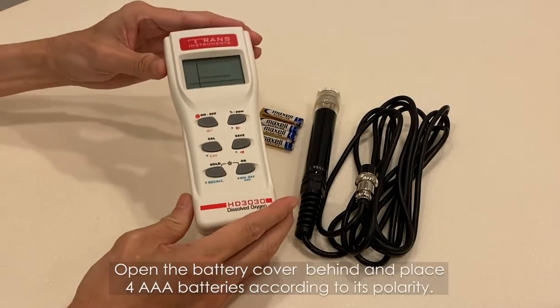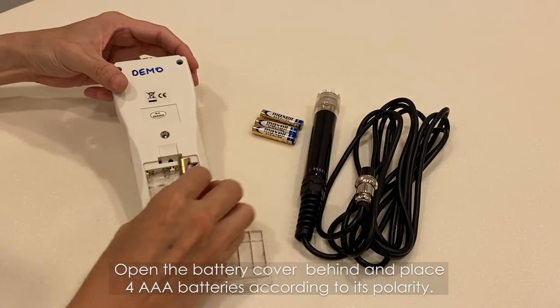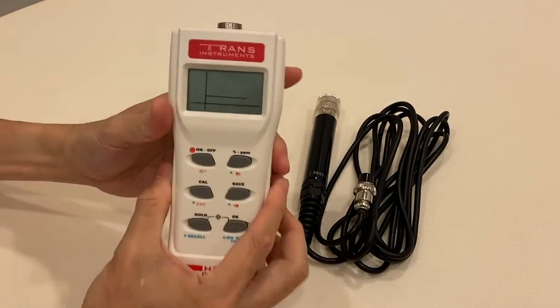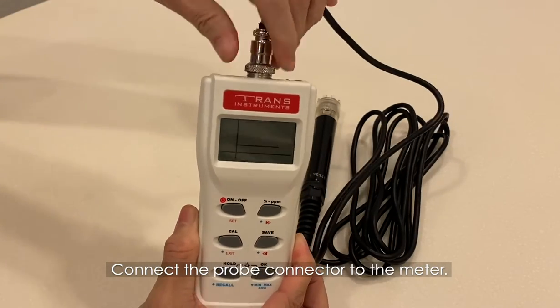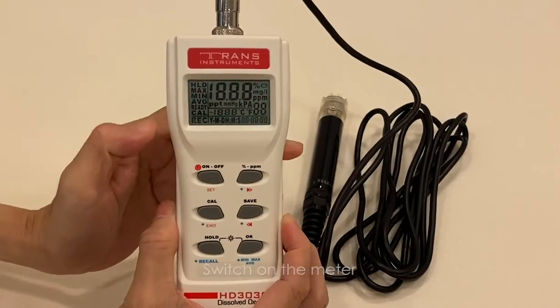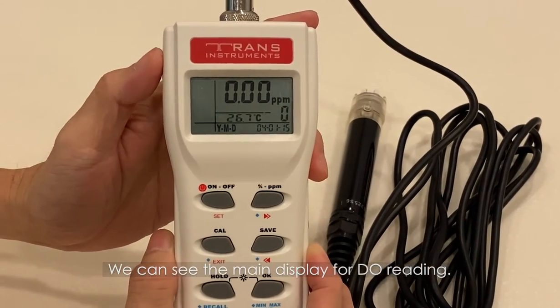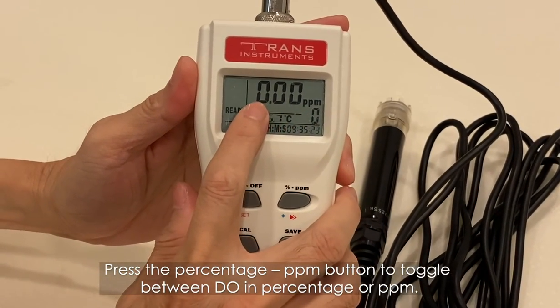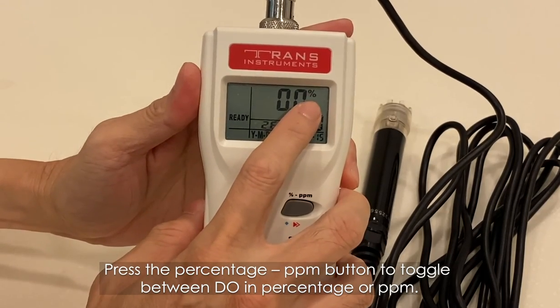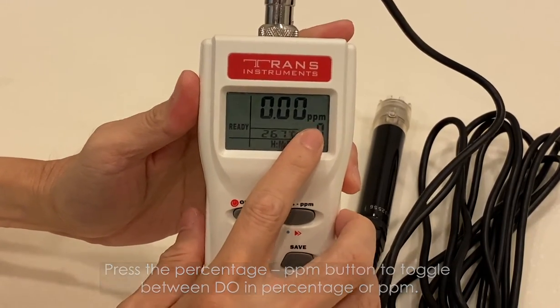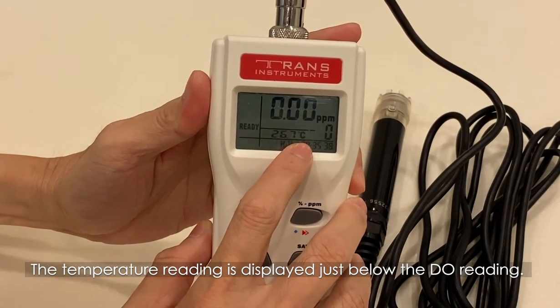Open the battery cover behind and place four AAA batteries according to polarity. Connect the probe connector to the meter. Switch on the meter. You can see the main display for DO reading. Press the %PPM button to toggle between DO in % or PPM. The temperature reading is displayed just below the DO reading.